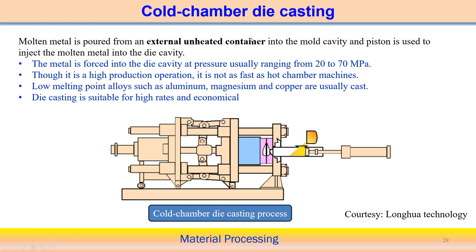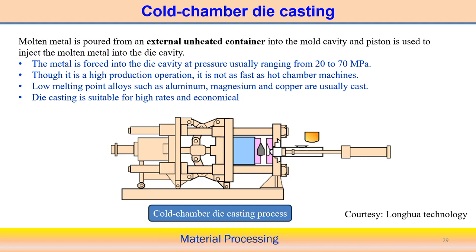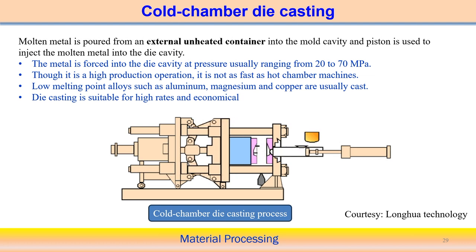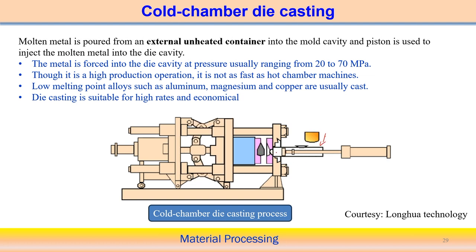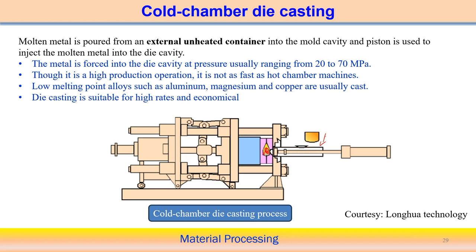Another variant is cold chamber die casting, where the liquid metal container is external and away from the mold cavity — hence the name cold chamber. Liquid metal is poured into a shot sleeve, then a piston forces it into the die cavity. Metal is forced into the die cavity under pressure ranging from 20 to 70 MPa. Production rate is high, but not as fast as hot chamber machines.